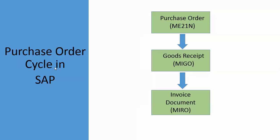In the SAP Purchase Order Cycle, the first stage is creation of the purchase order. We raise a purchase order and send it to our vendor. The second step is goods receipt. With reference to the purchase order raised, the vendor sends the goods to our plant. Our plant personnel check the quality and quantity of the product, and afterwards they create a goods receipt in transaction code MIGO.